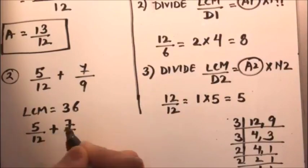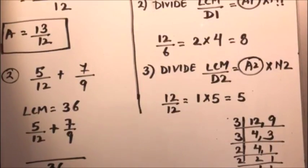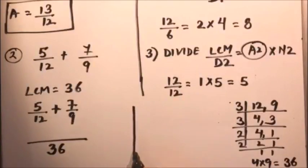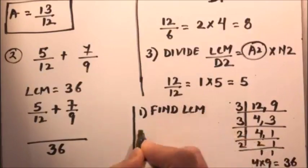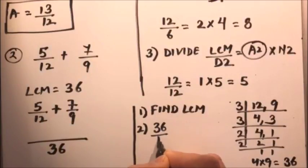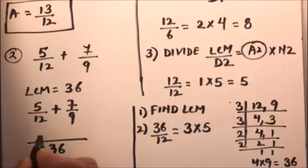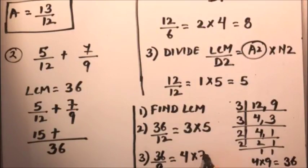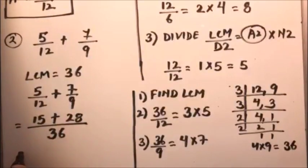We write the question again: five over twelve plus seven over nine, with the common denominator thirty-six. Step two: thirty-six divided by twelve is three, and three times the numerator five is fifteen. For the second fraction: thirty-six divided by nine is four, and four times the numerator seven is twenty-eight.